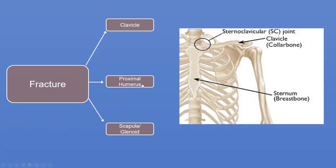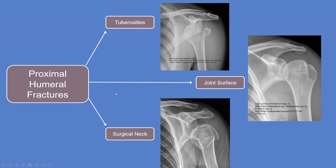Going to the proximal humerus, that can also be divided into three areas. It can be the tuberosities — the greater tuberosity pulling away, often occurring after a dislocation, where the rotator cuff is attached and as the shoulder dislocates the tuberosity comes away as the weak link, giving a complex scenario of dislocation and tuberosity fracture that may need surgery if displaced. The fracture can also involve the joint surface, where a big dislocation causes a dent in the humeral head posteriorly, or can involve the surgical neck, or a combination of all three areas.